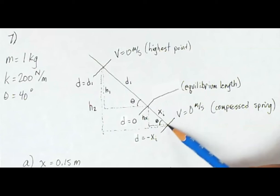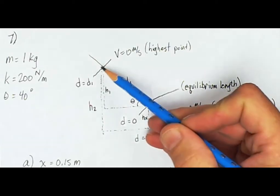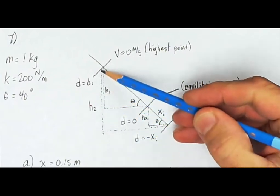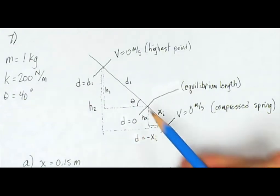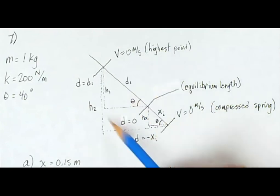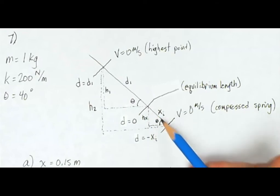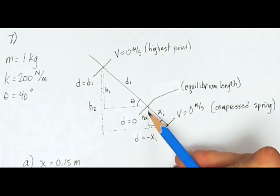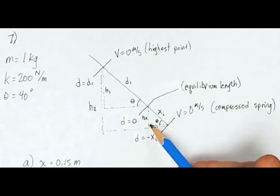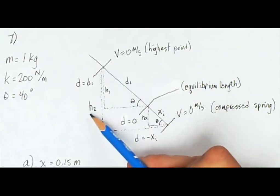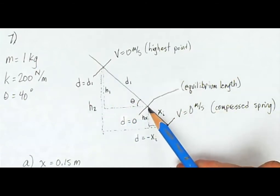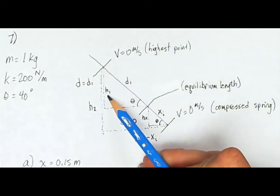The block itself is going to move from the compressed position, being pushed by the spring, all the way up to the highest point. Gravity works over this entire distance, which I've labeled h2 — the vertical height from the lowest point to the highest point. The distance the spring is compressed is xi, and the associated vertical height is hx. From the lowest point to the very highest point is h2, and from where the block leaves the spring to the highest point is h1.